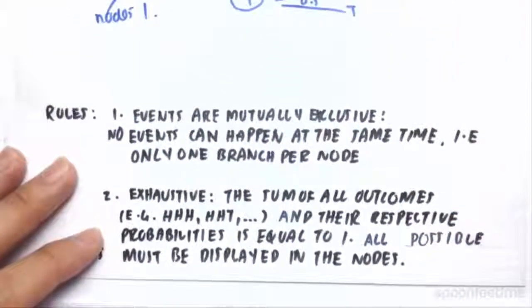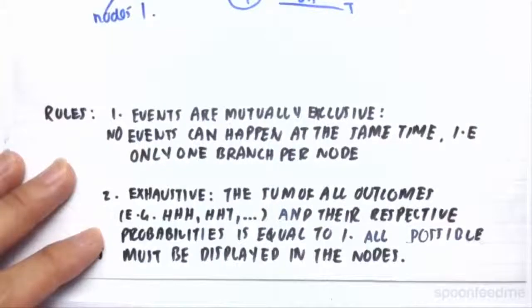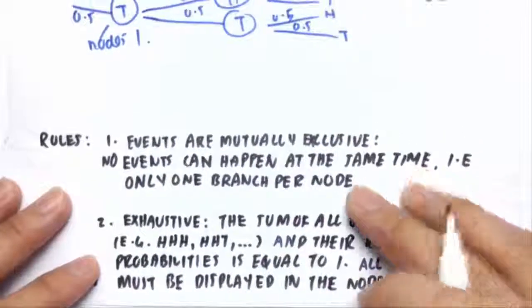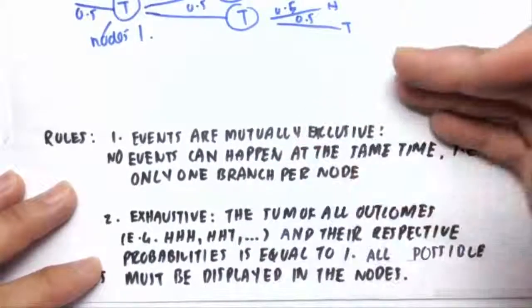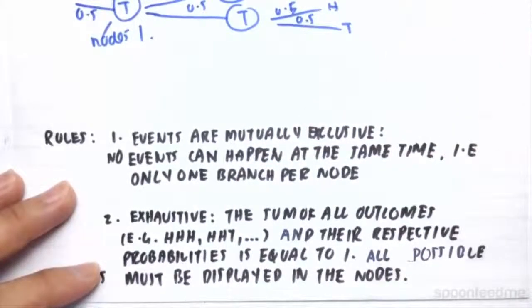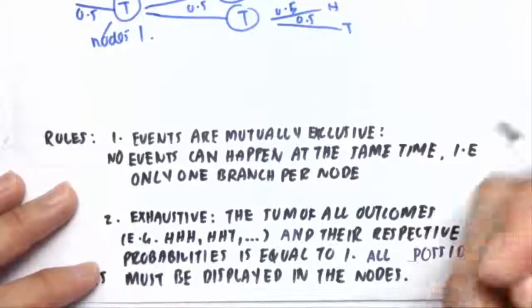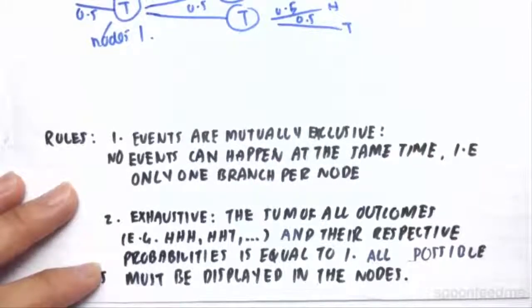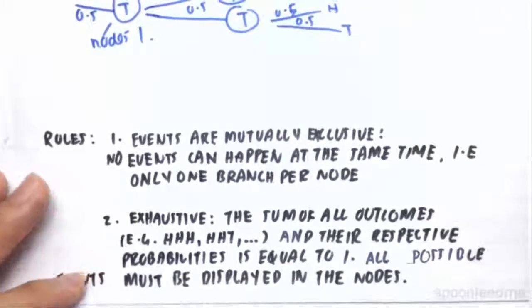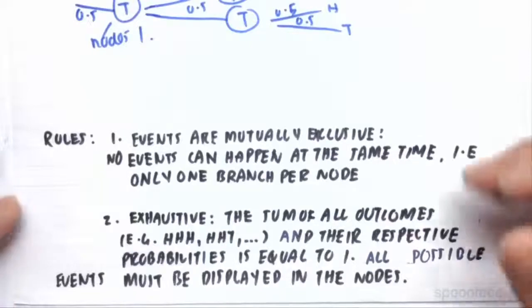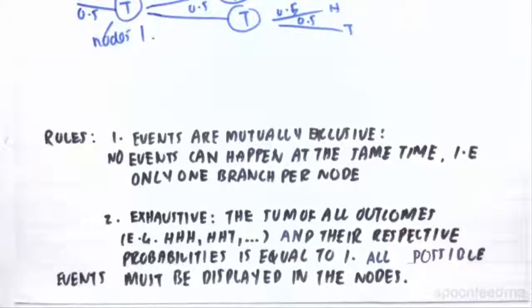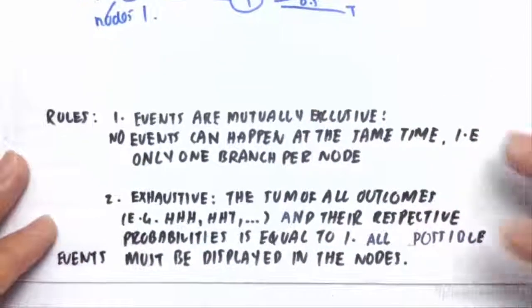Also, the sum of all possible probabilities or all possible outcomes, for example, heads heads heads, the sequence of heads first, heads second, heads third in your flips, or a sequence of getting heads first, heads second and then tails first. All these outcomes must be shown on the probability tree. And all their respective probabilities, when summed together, must equal to 1, so that all possible events are displayed and accounted for in those nodes.